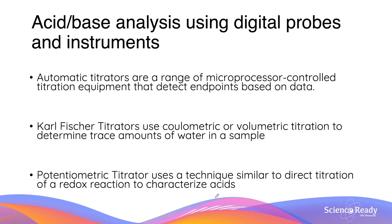How about acid-base analysis using digital probes and instruments? One method is using automatic titrators, which are microprocessor-controlled titration equipment that detect endpoints based on data. We also have Karl Fischer titration, which uses a coulometric or volumetric titration to determine trace amounts of water in a sample. The last one is potentiometric titration, a technique similar to titration of a redox reaction, used to characterize acids.